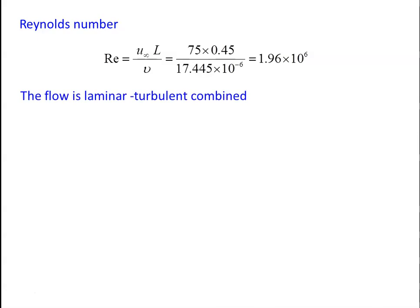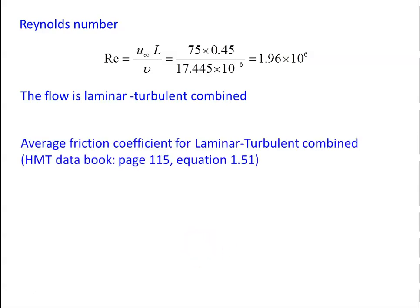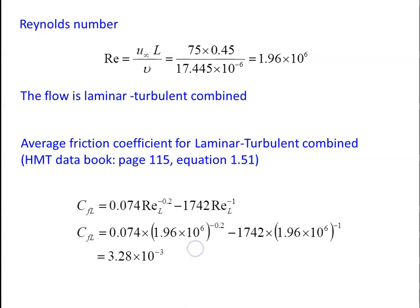Since Re > 5 × 10⁵, the flow is laminar-turbulent combined. Average friction coefficient for combined flow from page 115, equation 1.51: CfL = 0.074 × Re⁻⁰·² − 1742 × Re⁻¹ = 0.074 × (1.96 × 10⁶)⁻⁰·² − 1742 / (1.96 × 10⁶) = 3.28 × 10⁻³.